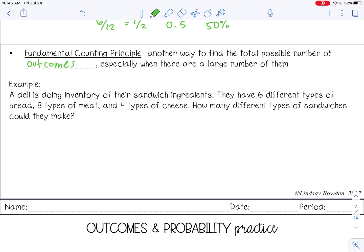What I'm going to do is multiply the number of types of bread times the number of types of meat times the number of types of cheese. So 6 times 8 times 4, and that gives me 192. So there's 192 different types of sandwiches that this deli can make.